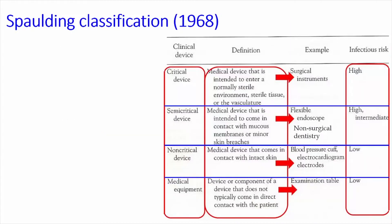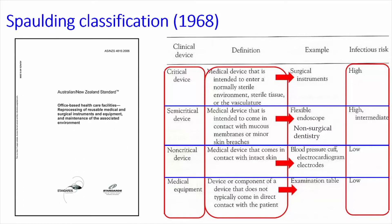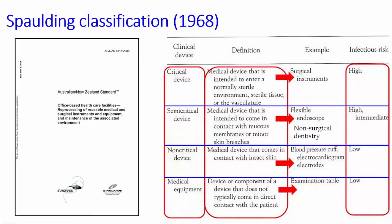The Spalding classification underpins all standards on instrument reprocessing around the world, including in Australia. For critical devices — those intended to enter or cut into oral mucosa, gingiva, or bone — items need to be sterilized and kept sterile to the point of use. This is opposed to semi-critical devices such as those used for non-surgical dentistry.